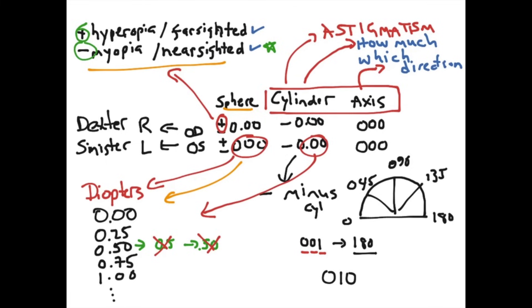For example, if it's 10, you write 010. If it's 1, you write 001. If it's 100, you write 100. Based on this, this should give you a basic understanding of the standard minus cyl prescription written by an optometrist.